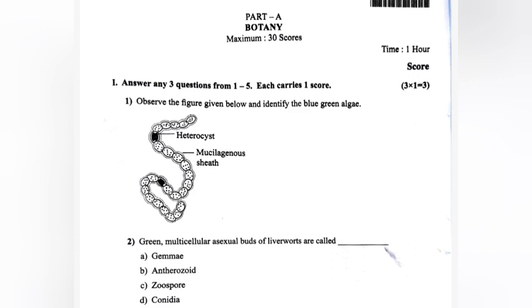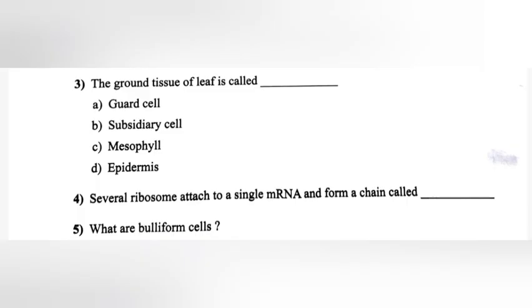Question 3: The ground tissue of leaf is called ___. Answer: Mesophyll.